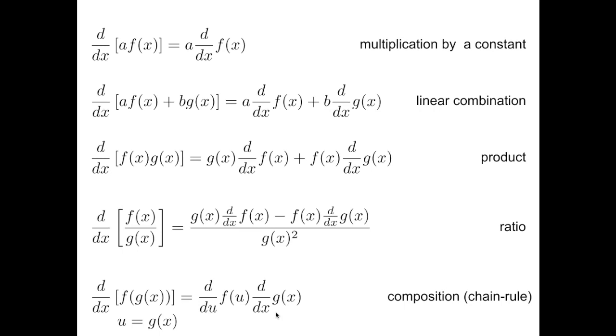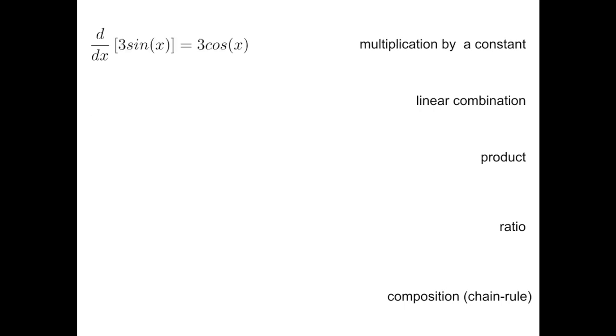Let me give you concrete examples also in this case. For multiplication of a constant, the derivative of 3 times sine of x is 3 times the derivative of sine, which is cosine. Very easy.